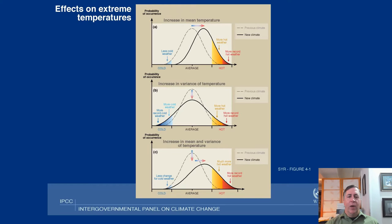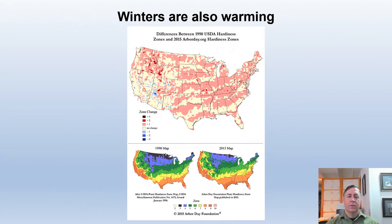Heat waves are becoming more frequent and more extreme. Winters are also warming, which affects which plants and animals are best suited for a particular area.